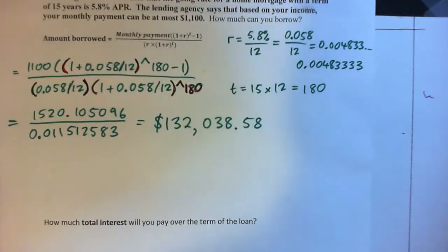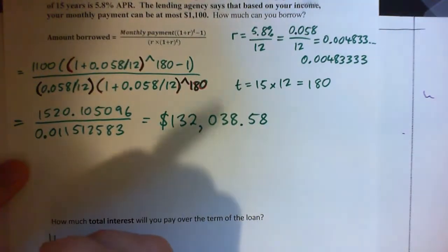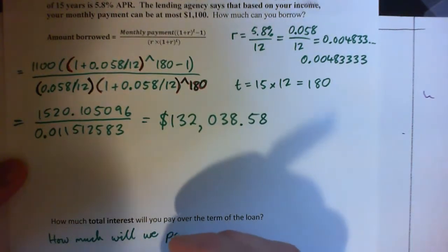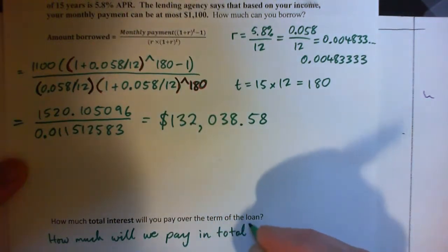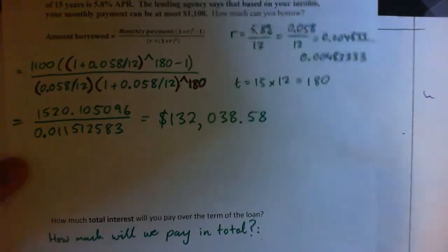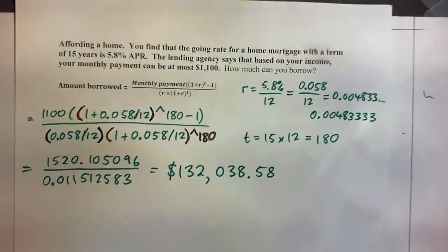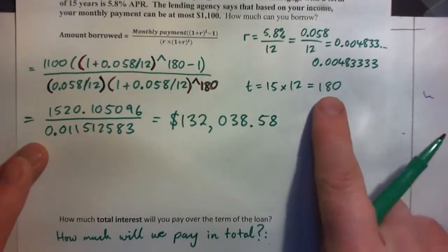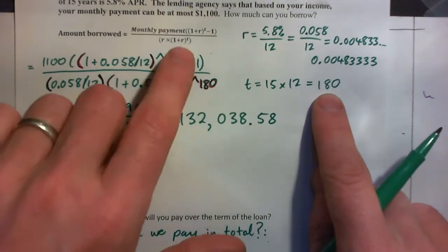So one thing you might want to think about is how much are we going to pay over the course of the loan? How much will you pay in total? Over the course of the loan, how much money will you pay to the bank in total? So how much do they pay in total? Let's figure it out. We're going to make 180 payments and each time it's going to be $1,100.